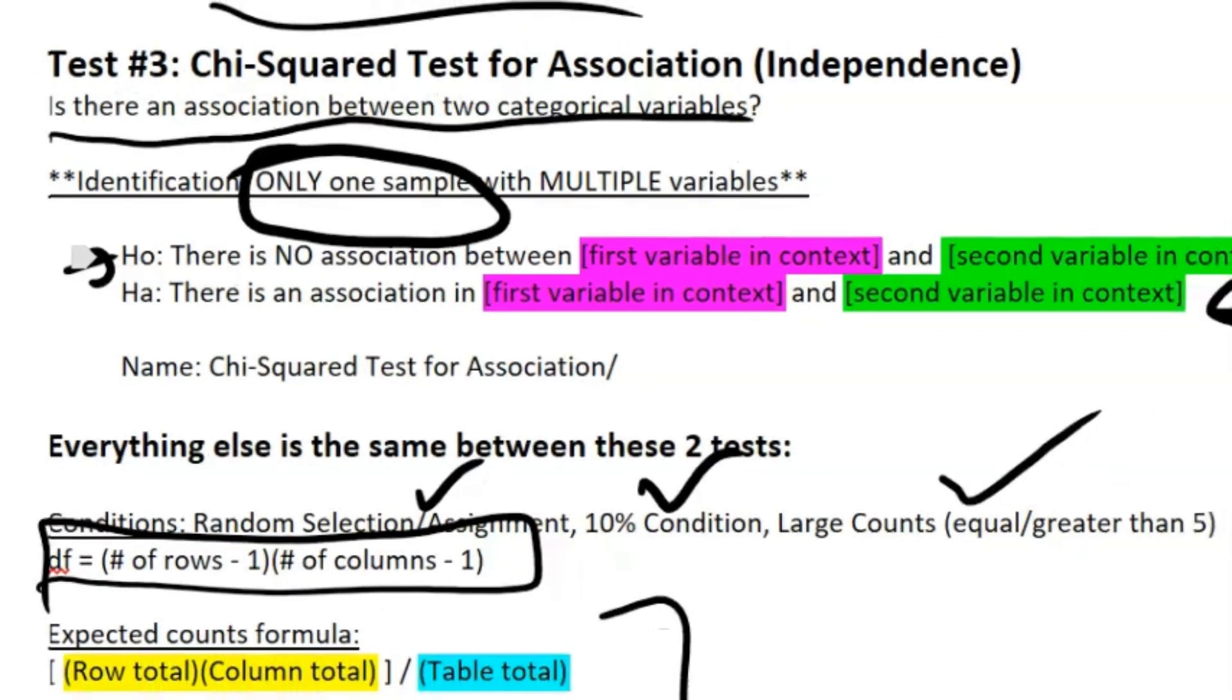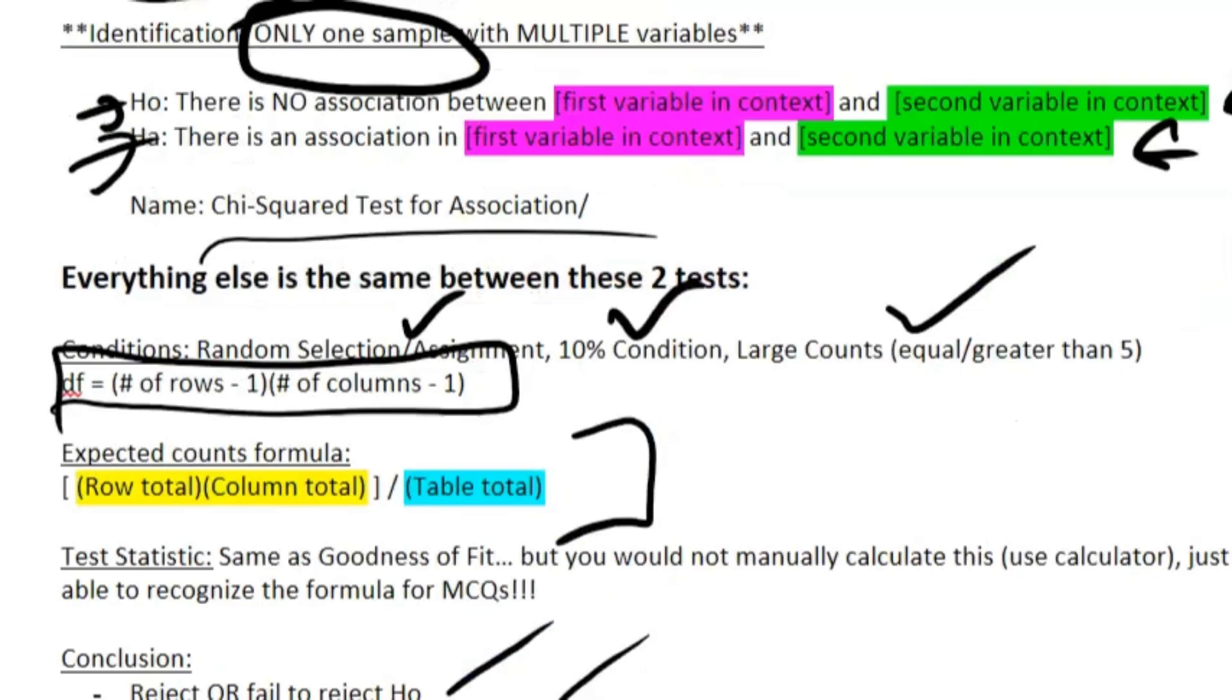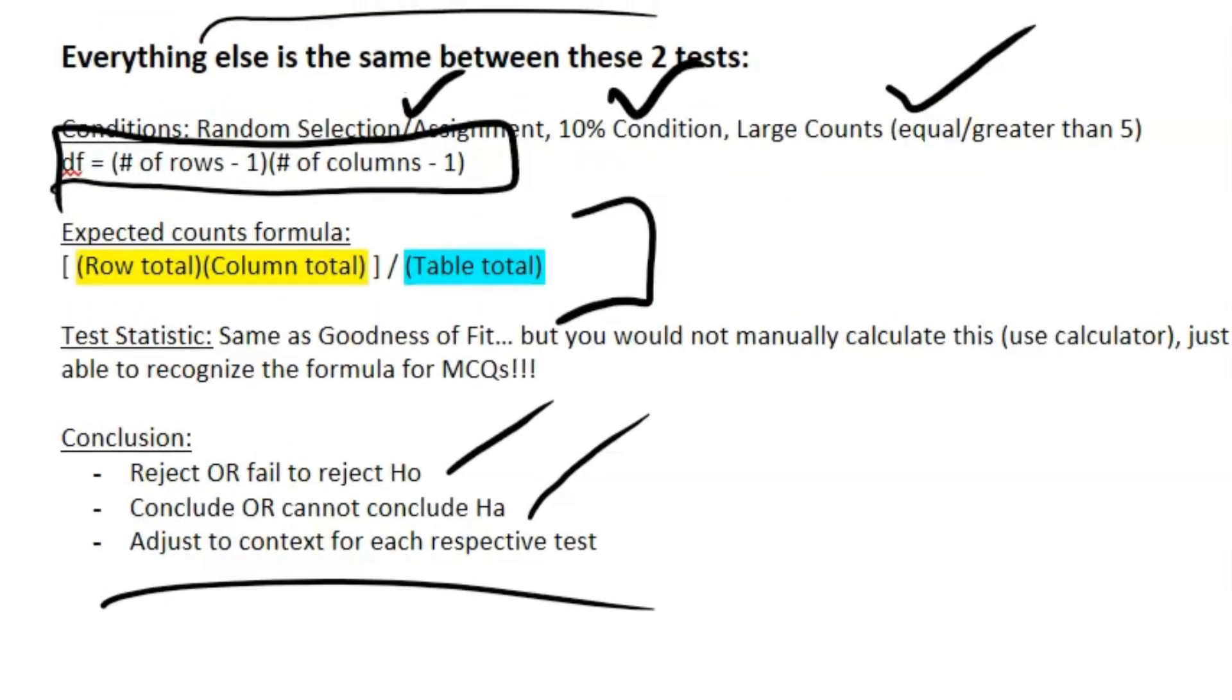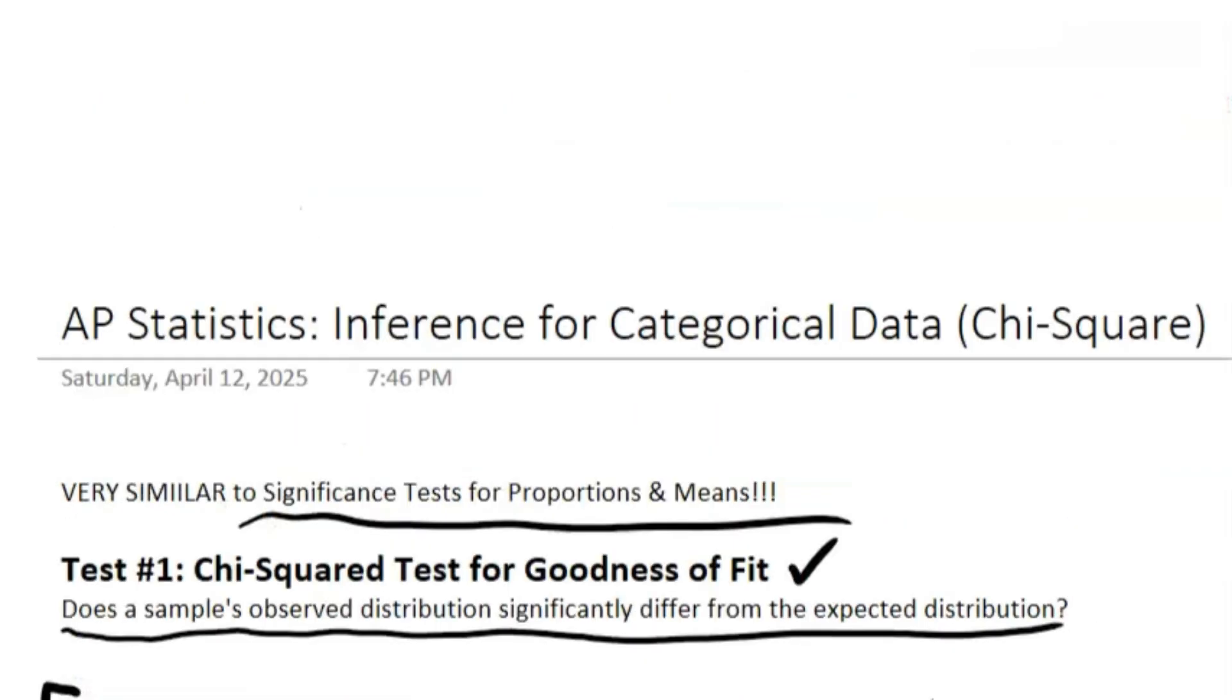Our null here would be there is no association between our first variable in context and our second variable in context in our one sample. And then our alternative is we're just changing one word here: there is an association between these variables. And the name is just chi-squared test for association. And everything else, guess what, is the exact same thing. So that does it for Unit 8 of AP Stats.